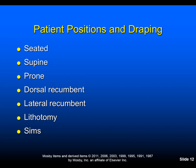The Sims position can be used for examination of the rectum or obtaining rectal temperature. The patient starts in lateral recumbent; the torso is rolled toward a prone position, the top leg is flexed sharply at the hip and knee, the bottom leg is flexed slightly, and we drape the patient from shoulder to toes.